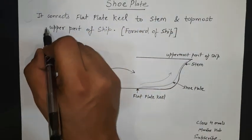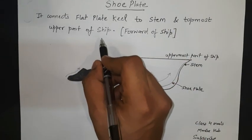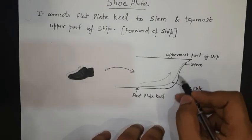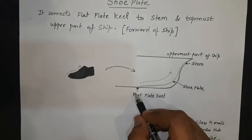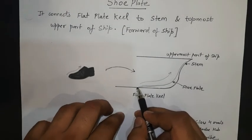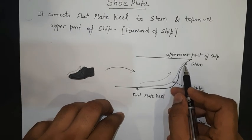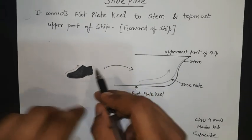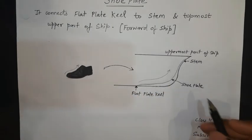By definition, the shoe plate connects the flat plate keel to the stem and the topmost part of the ship — that is the forward of the ship. Looking at the diagram, the stem is located in the forward of the ship and this is the uppermost part of the ship. This is the flat plate keel. So the shoe plate, by analogy with a shoe, connects the flat plate keel right up to the stem and up to the uppermost part of the ship. Hence the name shoe plate.